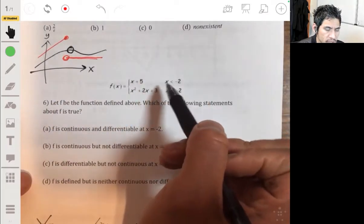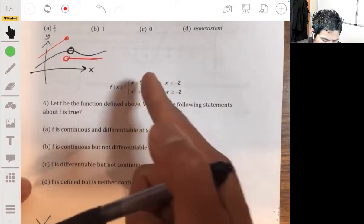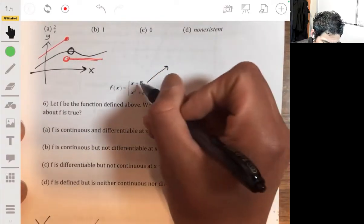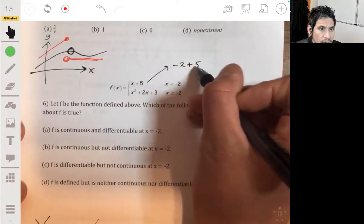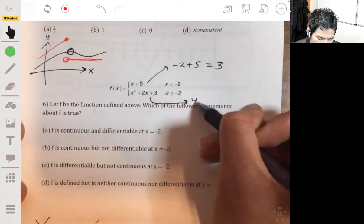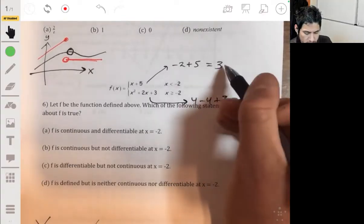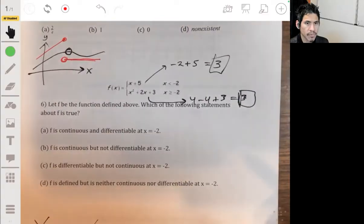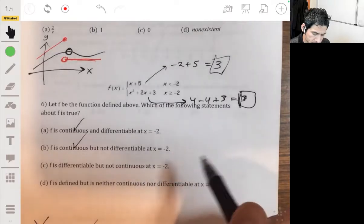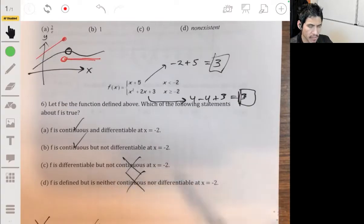For it to be continuous at negative two, that means when you plug negative two into each of these, you should get the same value. So let's see, plug negative two into there, you'll get negative two plus five, which will give you three. If you plug into the bottom guy, you'll get four minus four plus three. Okay, so it's continuous. So it's not going to be C or D, so A or B.